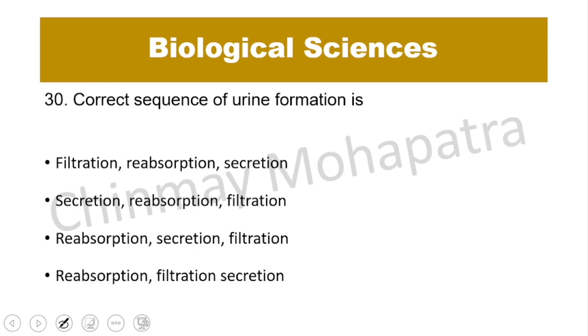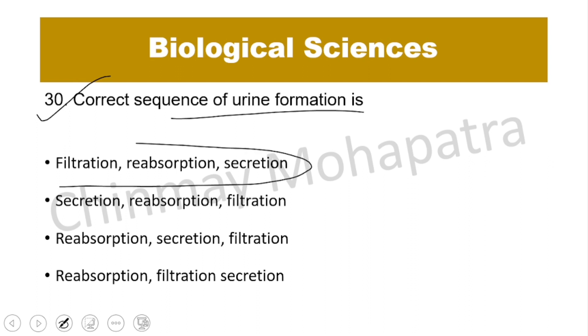Question number 30: What is the correct sequence of urine formation? The sequence is filtration, then reabsorption. The right answer is option A.